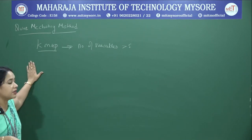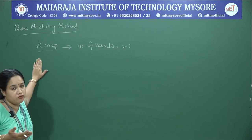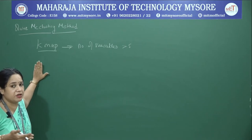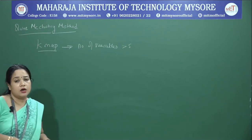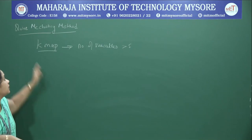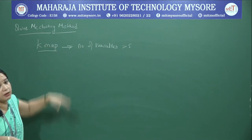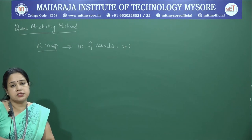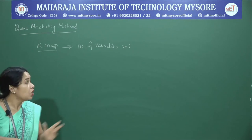So we go with the Quine-McCluskey method, which overcomes the drawbacks of K-map. In Quine-McCluskey, this method was designed by Willard Quine and extended by McCluskey. We give it the name Quine-McCluskey method in honor of them. The two drawbacks overcome are: first, it can handle more variables, and second, code implementation becomes feasible.